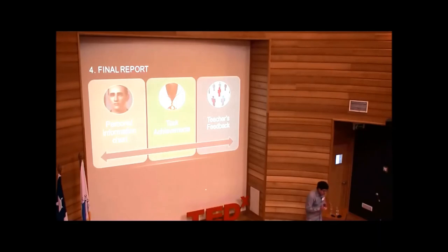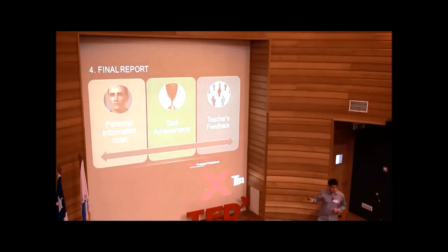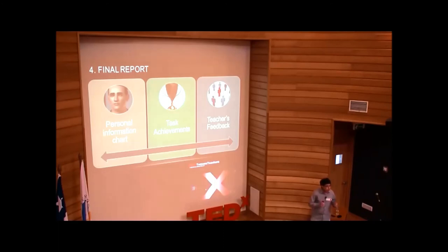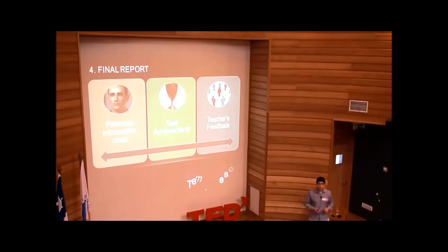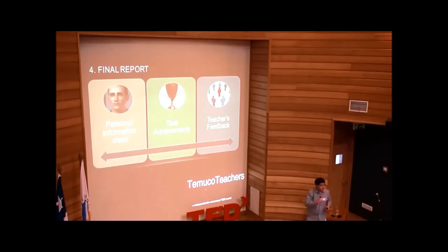The final report is the last step and is divided in three parts. First, the personal chart information — the chart shown at the beginning must be handed in to the teacher. Second, a task achievement rubric that the teacher will use to assess the student. And third, teacher's feedback — the teacher talks with the student and gives them the task achievement chart, explaining what were the strengths and weaknesses of their gameplay process.